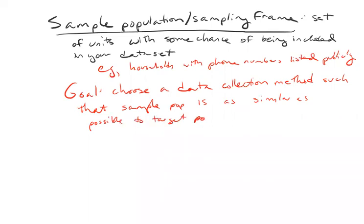I want to get the right answer. So it would be nice if my way of collecting data did not systematically exclude people who are not part of the target, and also if it did not include people who are not part of the target.